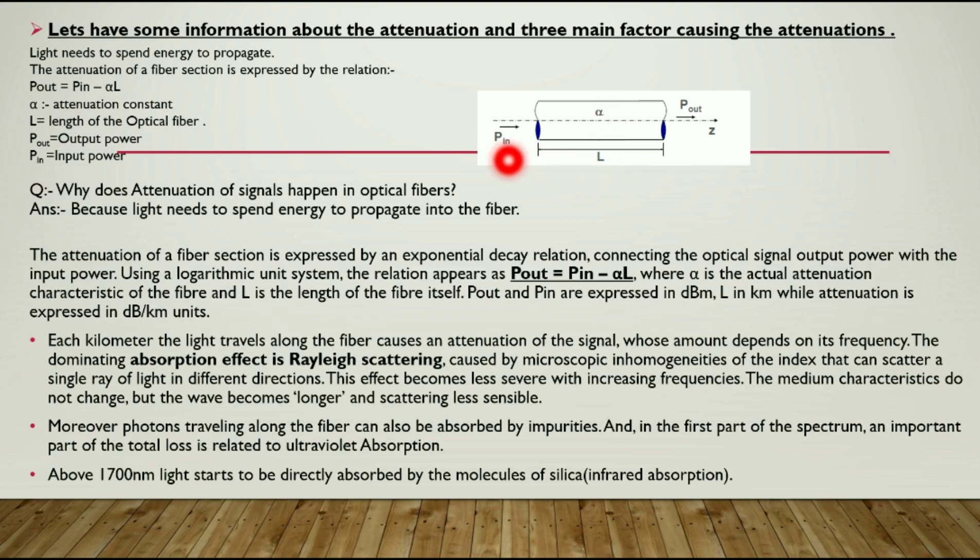Whenever the light is spent to the medium it attenuates and the output power is always less than the input power. Here is a question: why does the attenuation of the signal happen in the optical fiber? The answer is because light needs to spend energy to propagate into the fiber.